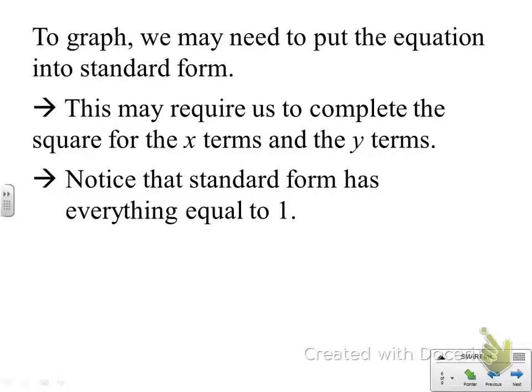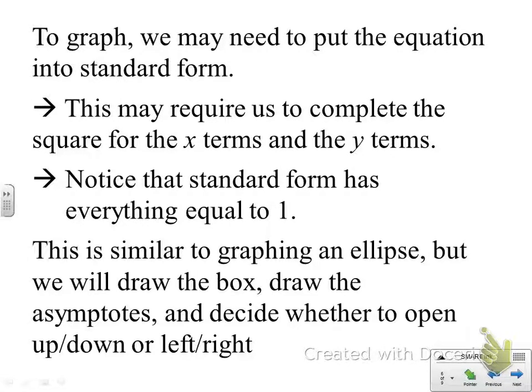Remember that our standard form has everything equal to 1. And when we graph, it's going to be similar to graphing an ellipse. But instead of connecting those four points that go around the center in an oval, we're going to use those to draw the box. We're going to use the box to draw the asymptote. And then we'll decide whether to open the hyperbola up and down vertically or left and right horizontally.